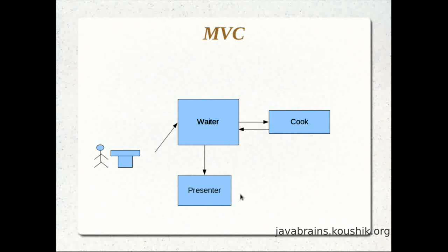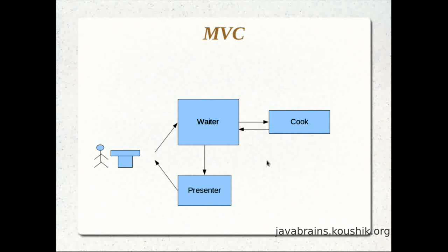The job of the presenter is to make the cooked food look more appealing — they add things and organize the presentation so it looks really good on the table. After the presenter is done with their work, the food is passed back to the person who ordered the dish. This is actually the MVC pattern, with the model, view, and controller roles all being performed here.